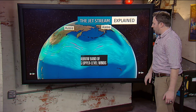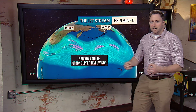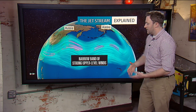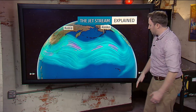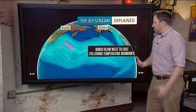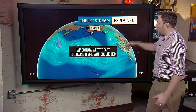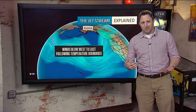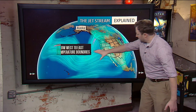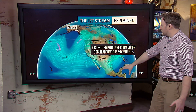First of all, let's take a look at the earth. We've got these narrow bands of really high-speed winds. They're really high in the atmosphere — about 40,000 feet up — and they blow generally west to east, following the temperature boundaries across the northern hemisphere. You'll get those colder temperatures to the north and those warmer temperatures to the south.